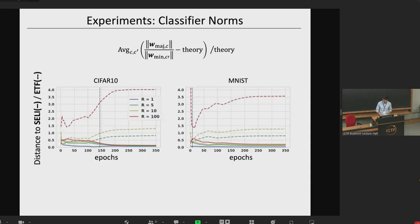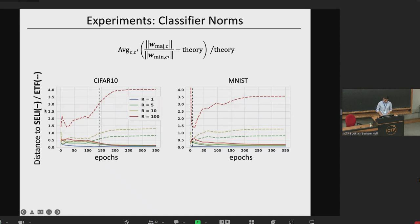But does this work? Here is an experiment where during training we measure the average ratio of majority classifier norms over minority classifier norms and compare it to the theoretical value. Under the ETF conjecture this ratio equals one; under the SELI conjecture it takes a different value. Comparison to SELI geometry is shown in solid line, and to ETF geometry in dashed line. The curves go down when compared to SELI geometry but go up when compared to ETF geometry — so they clearly converge better to the SELI geometry.